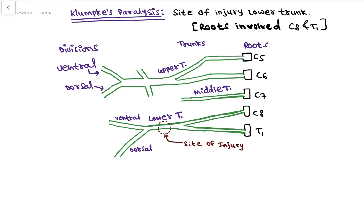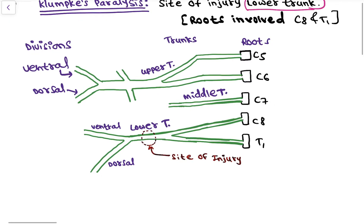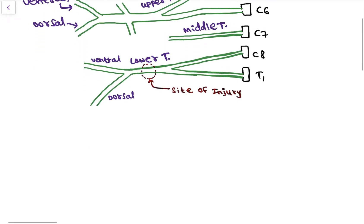Hello friends, in this video we will learn about Klumpke's paralysis. In Klumpke's paralysis, the site of injury is the lower trunk. As we already learned about Erb's paralysis where the site of injury was in the upper trunk, here the site of injury is in the lower trunk and the roots involved are C8 and T1.